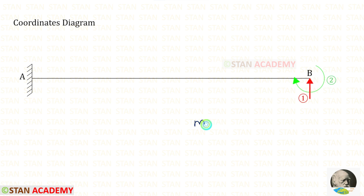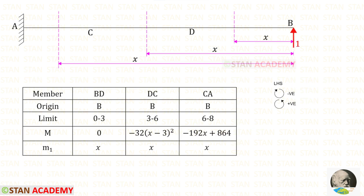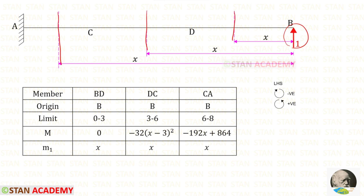Now we are going to find the moment M1. We remove all loads from the beam and apply a unit load at the first coordinate. Since RB is directed upward, we apply a unit load in the upward direction at point B. Up to all sections, we have only this unit load acting in the anti-clockwise direction, so it will be positive. The distance is x, giving M1 = x for members BD, DC, and CA.